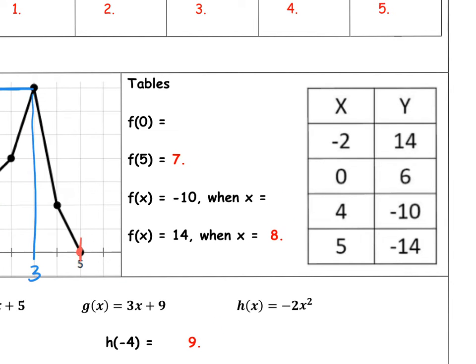Looking at the table, when f of 0, or f of 0 equals blank, this means when x equals 0. When x equals 0, the function is equal to 6. y is equal to 6.